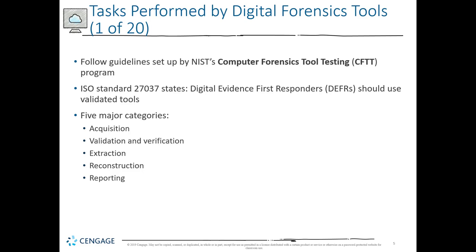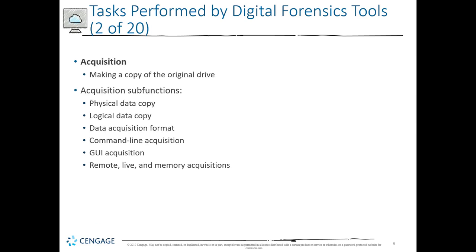Acquisition is essentially making a copy of the original evidence or drive. It could be physical data copies or acquiring data via a tool — graphically or through a command line. It could be in-person, live, a remote capture through the network, or memory acquisition. It depends on how you're making a copy of the original source, which could be a drive, memory, or other media.